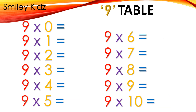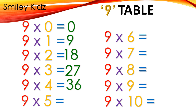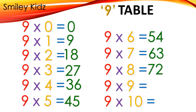Table 9: 9×0=0, 9×1=9, 9×2=18, 9×3=27, 9×4=36, 9×5=45, 9×6=54, 9×7=63, 9×8=72, 9×9=81, 9×10=90.